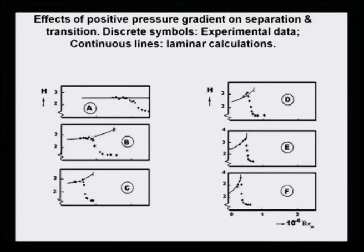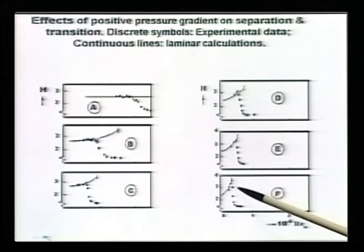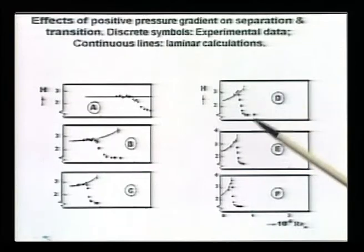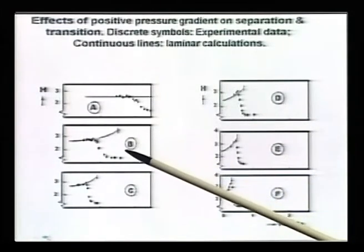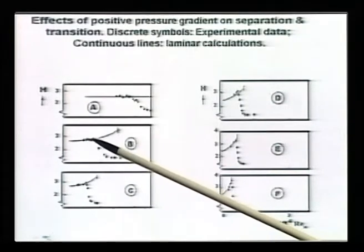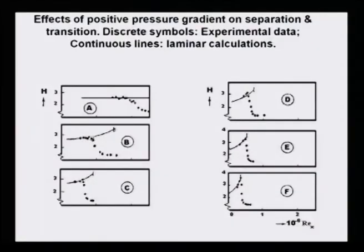You also notice one interesting thing: with larger adverse pressure gradient, this fall of H is rather instantaneous. Whereas for milder adverse pressure gradient, the transition is rather gradual - it just does not happen instantaneously like what you see on the right hand side frames.